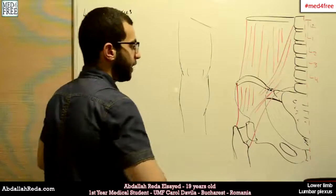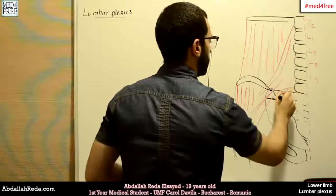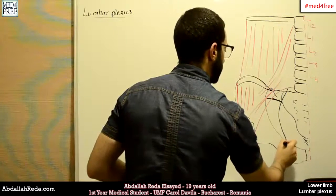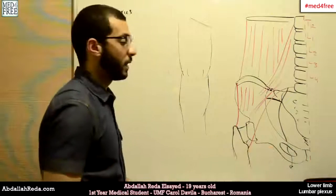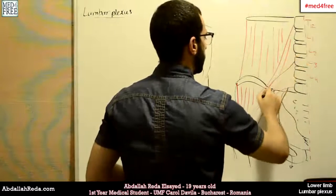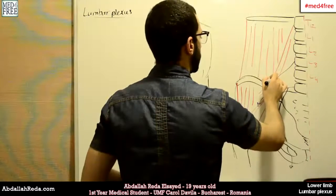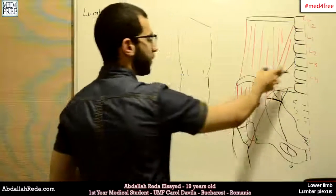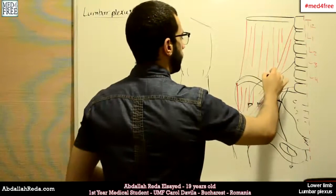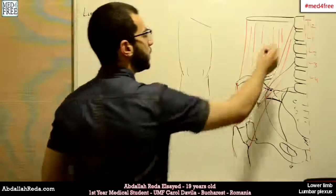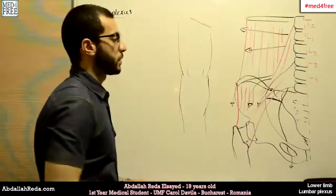The nerves are arranged as follows: the obturator nerve comes from behind and goes through the obturator foramen. The genitofemoral nerve passes in front of the psoas major muscle. The femoral nerve comes from behind the psoas major muscle. The lateral femoral cutaneous nerve also comes from behind the psoas major. The iliohypogastric and ilioinguinal nerves are in the upper part.